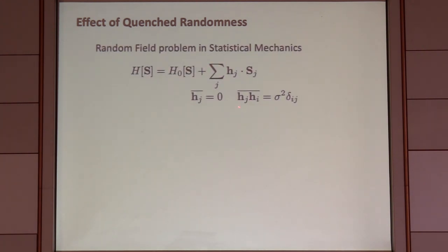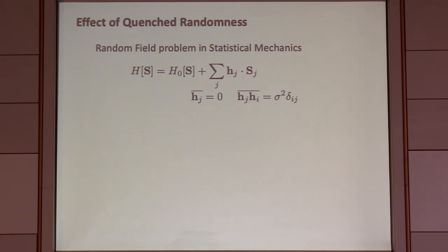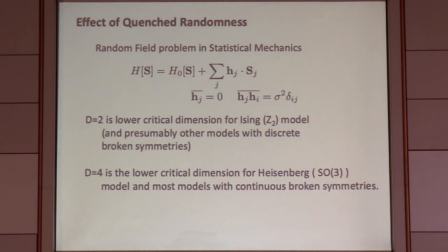Here S is a generalized representation of an order parameter — S doesn't mean spin here. This is a random field in which there's a field on each site j that favors some particular orientation of the order parameter, gaussianly randomly distributed. There are theorems about the random-field problem that determine almost everything I'm going to tell you.